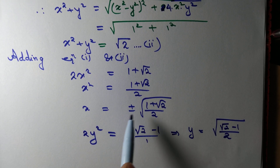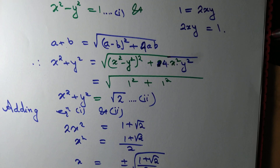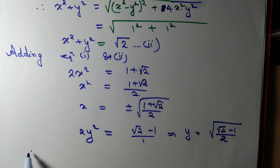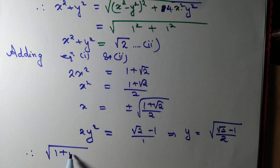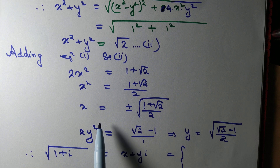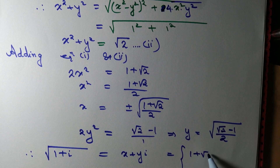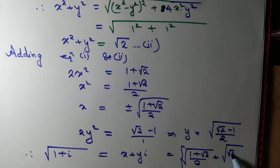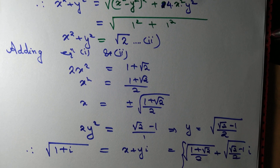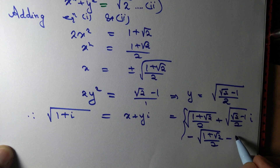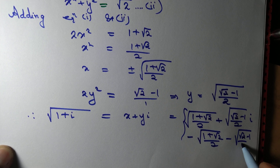As we see, 2xy = 1 means both x and y must be positive or both negative. Therefore √(1+i) = x + iy. Taking both positive: √((1+√2)/2) + i·√((√2-1)/2). Taking both negative: -√((1+√2)/2) - i·√((√2-1)/2).